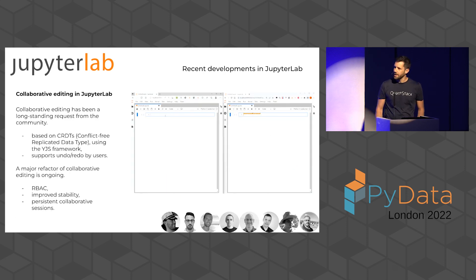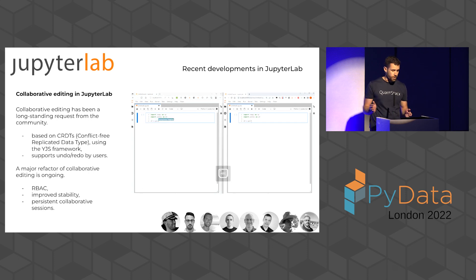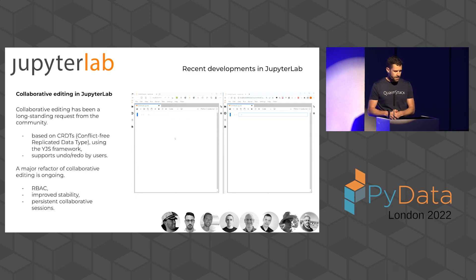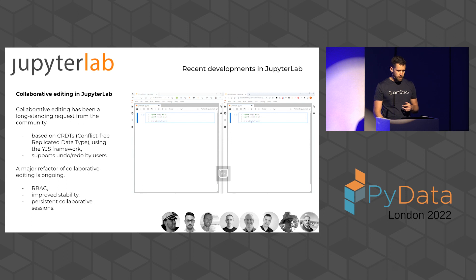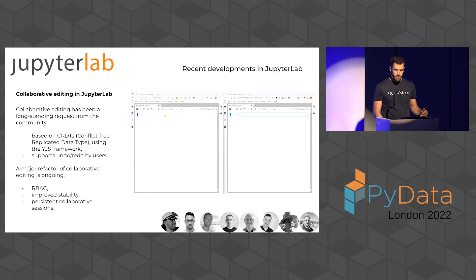The next exciting development of the past year in JupyterLab was collaborative editing, just like in Google Docs. It's been a longstanding request of the community for many years. Our implementation is based on CRDTs — conflict-free replicated data types — so you have automatic resolving of conflicts and support for undo/redo by users. For JupyterLab 4, a major refactor is ongoing, introducing role-based access control, improving stability, and providing persistent collaborative editing sessions so you can undo changes since the very beginning of your document.